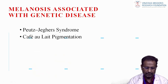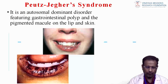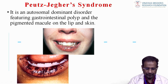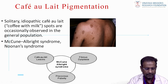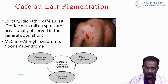Melanosis associated with genetic disorders: two genetic disorders are associated with melanin pigmentation — Peutz-Jeghers syndrome and neurofibromatosis. Peutz-Jeghers syndrome is an autosomal dominant disorder featuring gastrointestinal polyps and pigmented macules on the lips and skin. McCune-Albright syndrome and Noonan syndrome are also associated. The pigmentation appears as coffee-colored spots — brown color lesions.